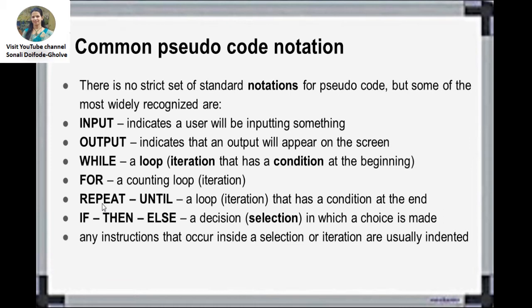What is the difference between WHILE and REPEAT-UNTIL? The WHILE loop is an entry-controlled loop — when entering the condition, we check it at the beginning. REPEAT-UNTIL means the condition is checked at the end. One more notation is IF-THEN-ELSE, which is a decision or selection in which a choice is made: if the condition is true, then do this. Any instructions inside the selection are easily included.